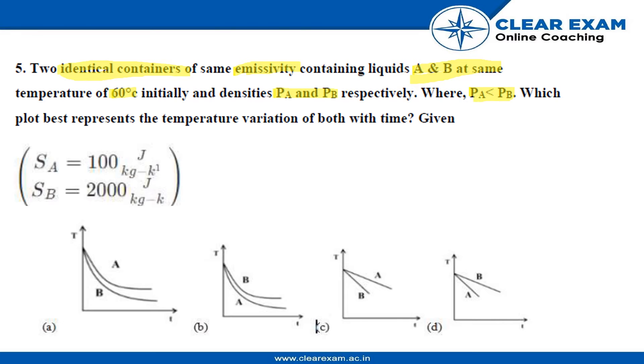Density of A is less than density of container B. These graphs are of temperature variation with time. We have to choose the correct variation graph. Now let's move to the solution.